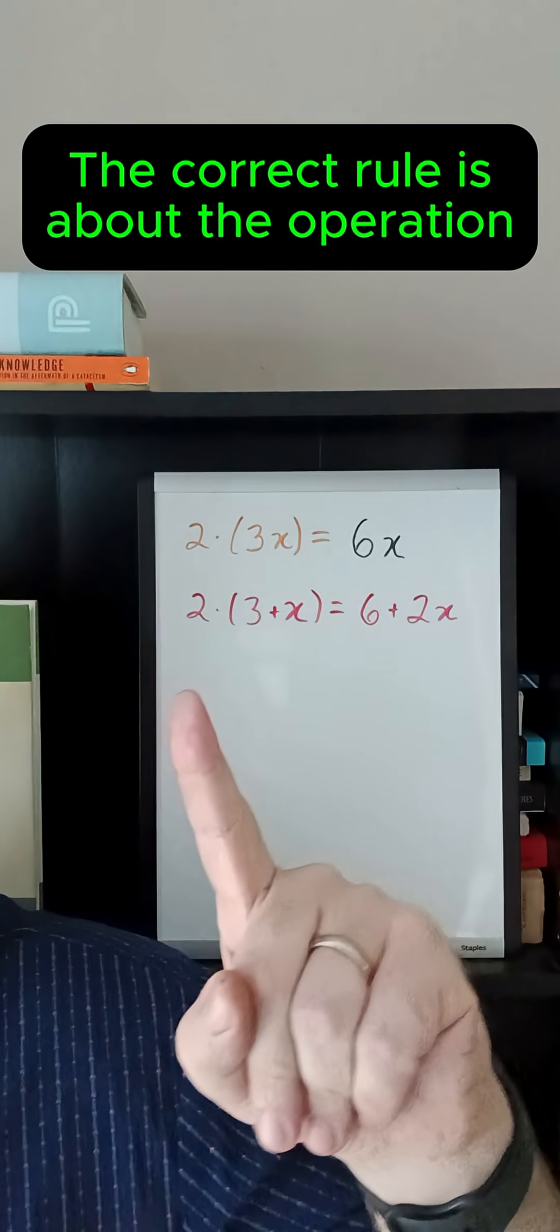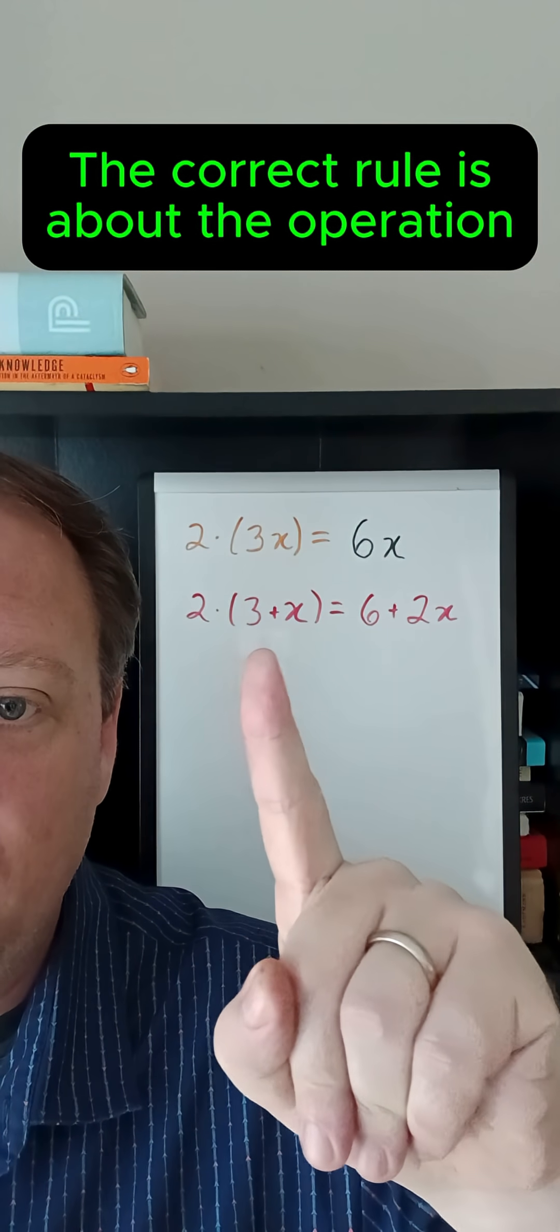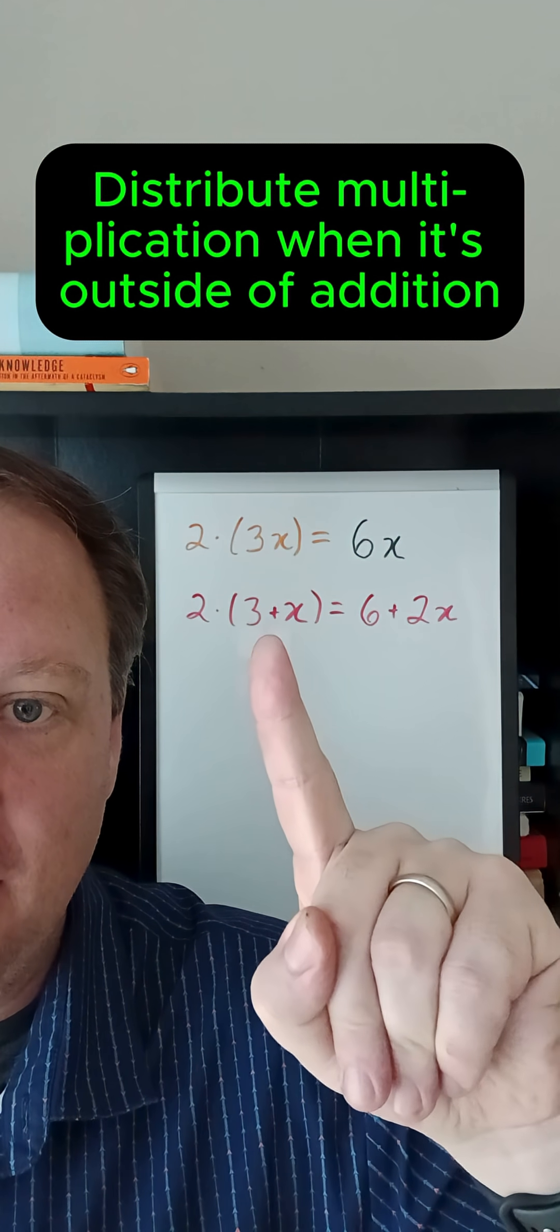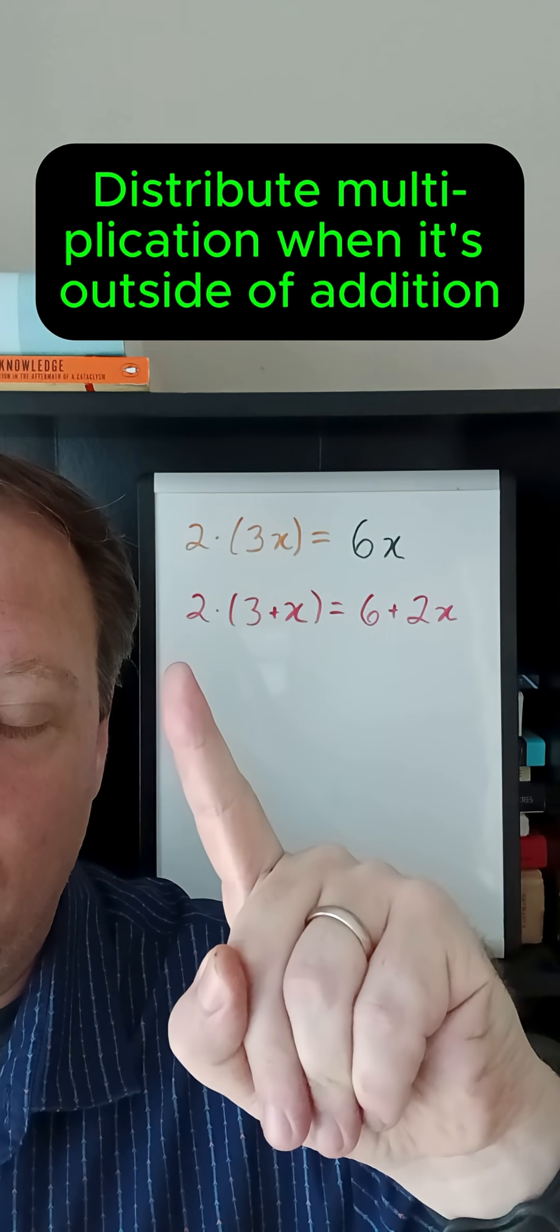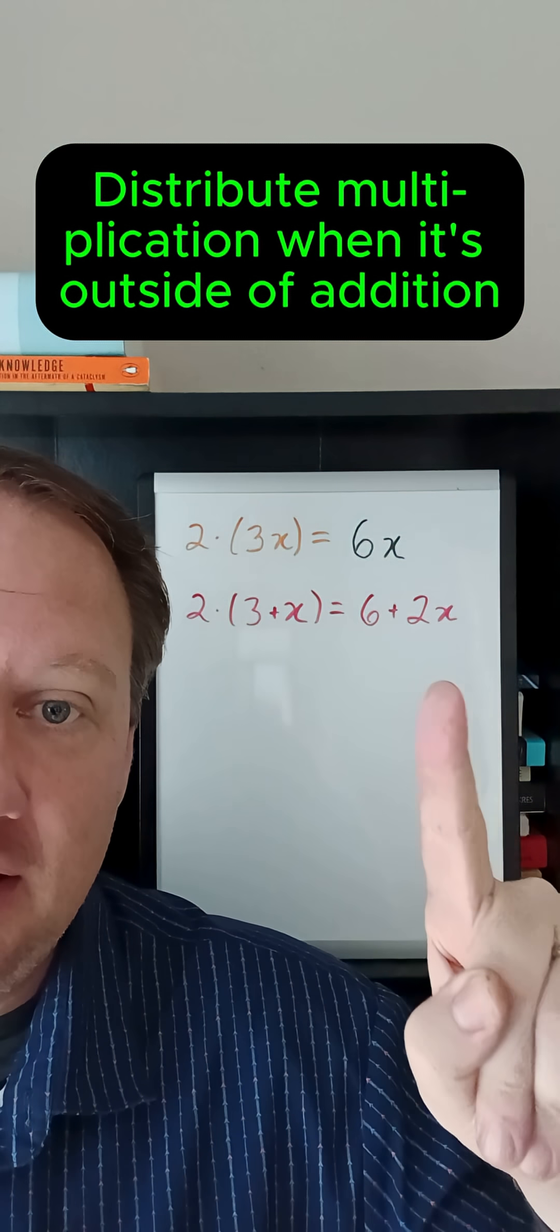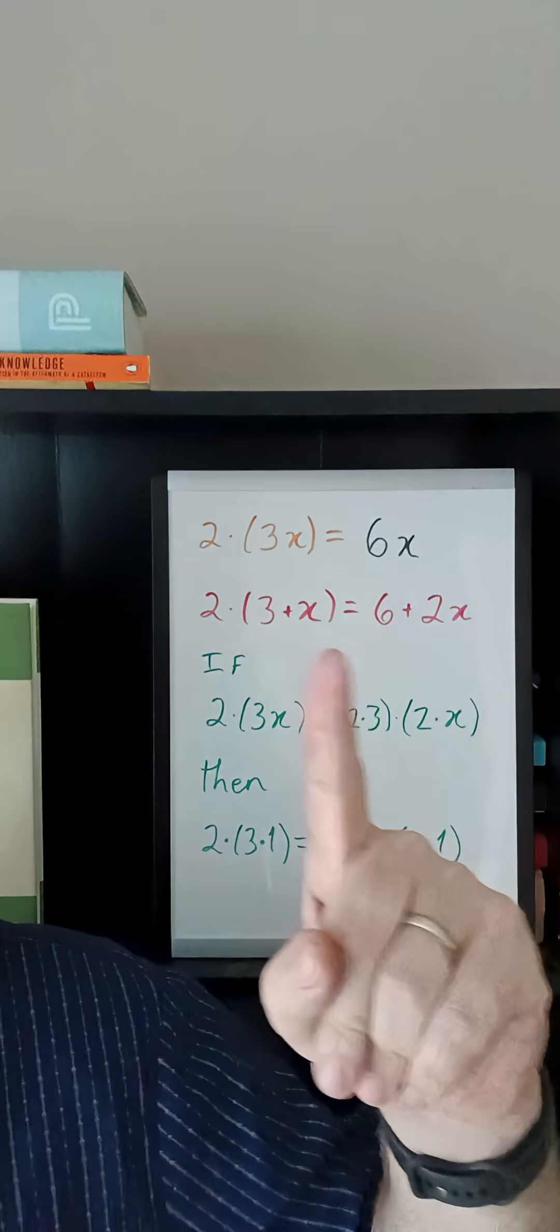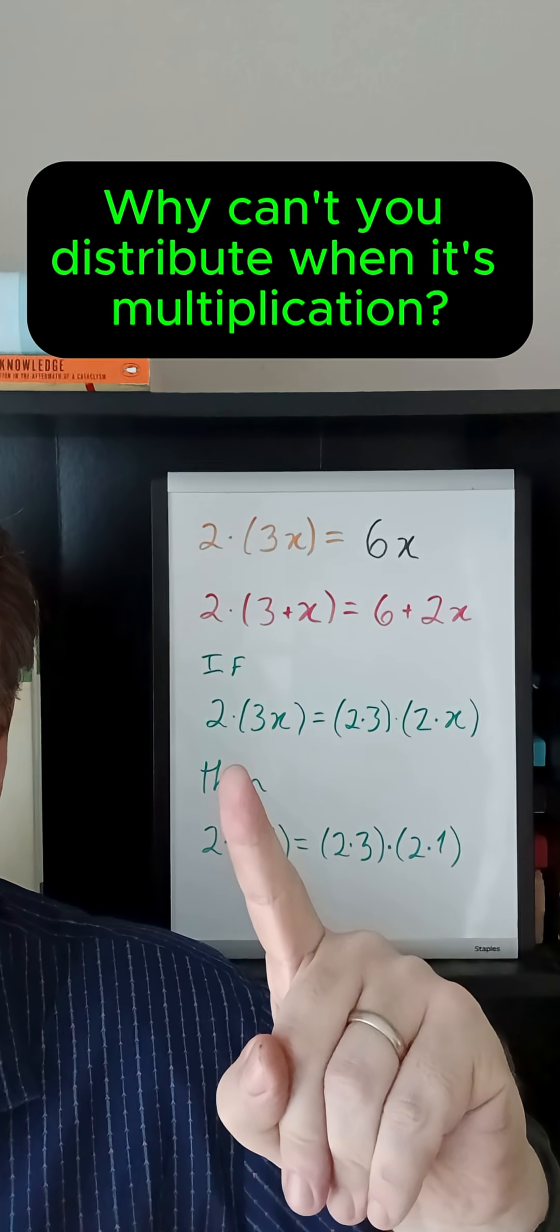Again, the rule for what is appropriate has to do with whether you're dealing with multiplication or addition. So instead of multiplication, if we had addition here, and we're multiplying on the outside, this is a situation where distribution is the appropriate thing.